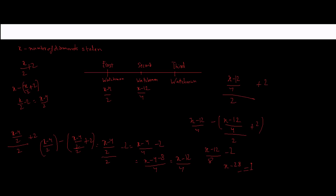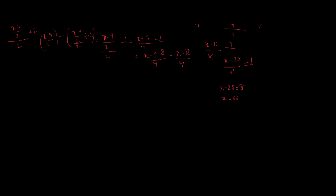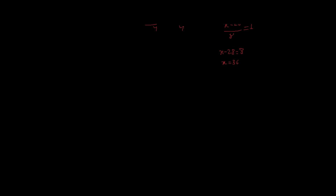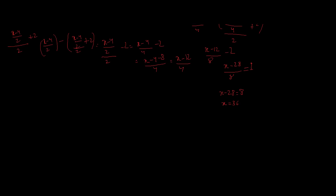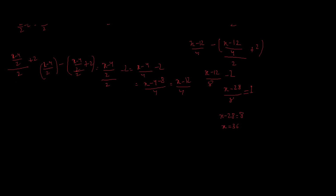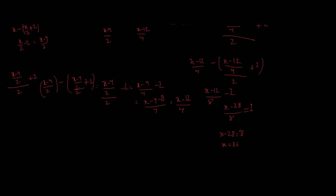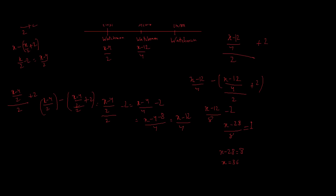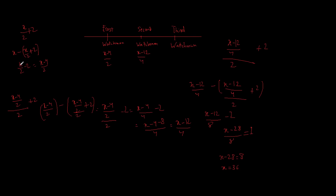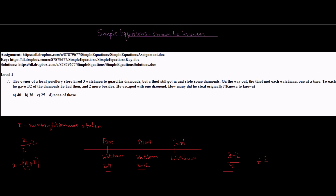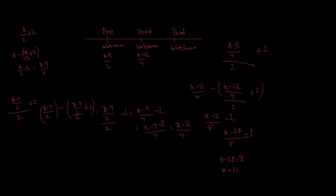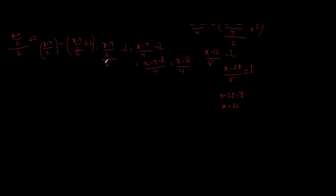Now if you see, this is a fine solution, but the problem with this solution is that it is very lengthy. Let's come to a shortcut method to solve this problem. The previous method was long because all the operations were performed on an unknown entity, X. We started with an unknown entity. But as the topic of this class says — 'known to known' — it would be better to perform operations on a known quantity.